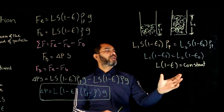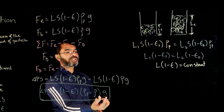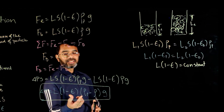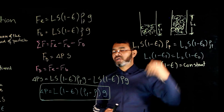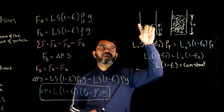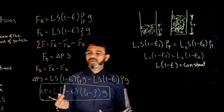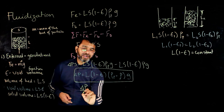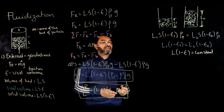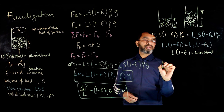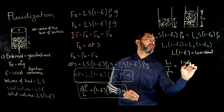Since L·(1 − ε) is constant, and ρ_p, ρ, and g are all constants, ΔP remains constant. This explains why, when the bed is fluidized and fluid velocity keeps increasing, the bed length increases but the pressure drop across the fluidized bed remains constant. An alternate form of the equation is: ΔP/L = (1 − ε)·(ρ_p − ρ)·g. Also, L1/L2 = (1 − ε2)/(1 − ε1).